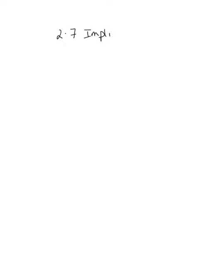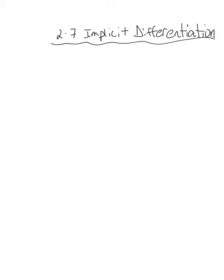Today we're going to look at lesson 2-7, which is implicit differentiation. Before I get to the notes you printed out, I want to explain what implicit differentiation is briefly by doing some pre-examples.